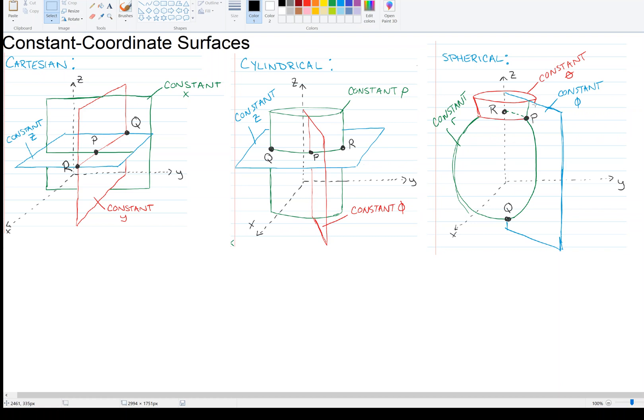You can think about it, if you fix the collatitude angle, which is the angle it makes with z axis, and everything else is allowed to vary, like phi and r, then what you get is this cone in red. You get a cone there. And again, if you fix the azimuthal angle phi, you get this constant semi-infinite plane, which was shown in red in the cylindrical coordinates. Now it's shown in blue over here.